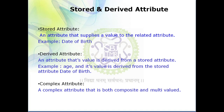The final type of attribute is the complex attribute. A complex attribute is both composite and multi-value. A very good example is address: address is composite because it can be split into many parts such as city, state, country, pin code, and area. Address is also multi-value because one person may have multiple addresses — a temporary address and a permanent address. That's why address is an example of a complex attribute.